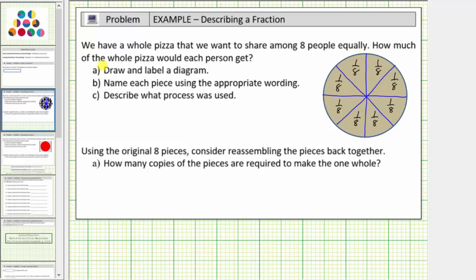So to answer the question, how much of the whole pizza would each person get? The answer is one-eighth of the pizza.